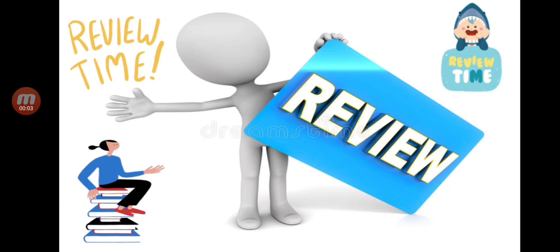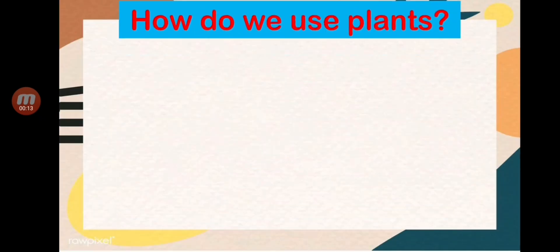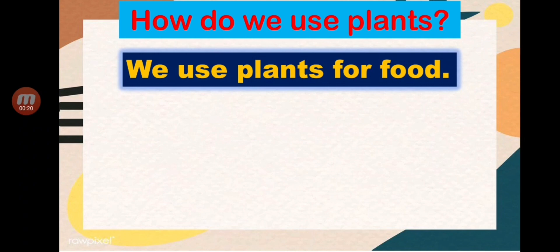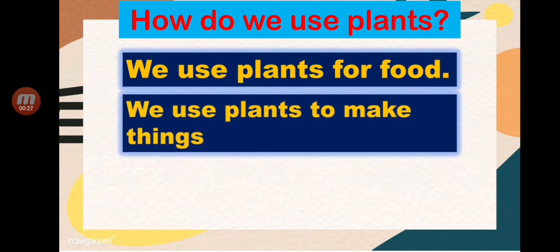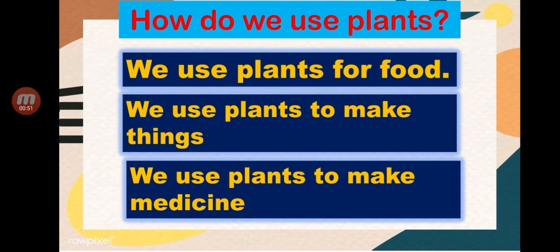It's time for our review about the topic we discussed. How do we use plants? First, we use plants for food. Another is we use plants to make things — those are plants that we can use to build houses, boats, bags, and baskets. And next, we use plants to make medicine.